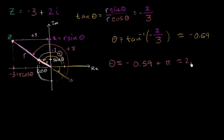So this is approximately 2.55 radians for theta. Does that make sense? If we go straight up, that's pi over 2 radians, which is about 1.57. And pi is 3.14. So 2.55 is indeed between pi/2 and pi, which puts us in the right quadrant — the second quadrant. So this angle of 2.55 radians is correct.